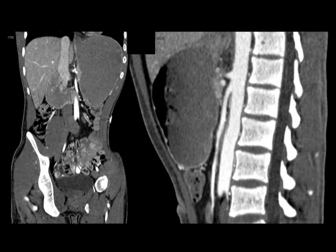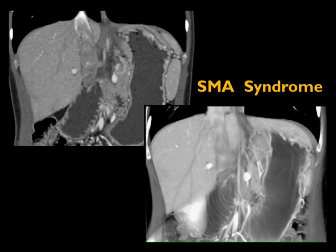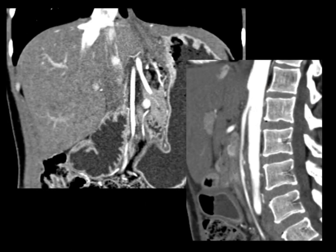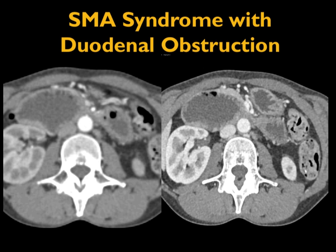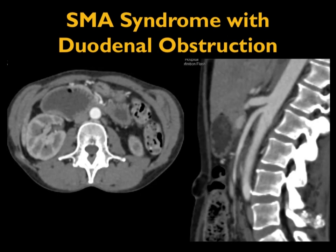In this case, there's the cutoff at the SMA and marked narrowing of the SMA angle, very well seen in this study. Another example: dilated duodenum, the SMA transition, and the dilated loop of bowel — very nicely shown, classic SMA obstruction. Here it shows the dilated loop, the markedly decreased angle, and the markedly decreased distance. When you have these findings together, it's very easy to make a specific diagnosis.